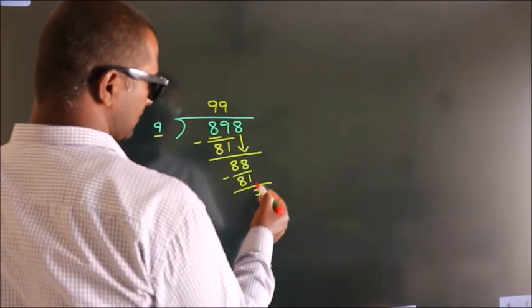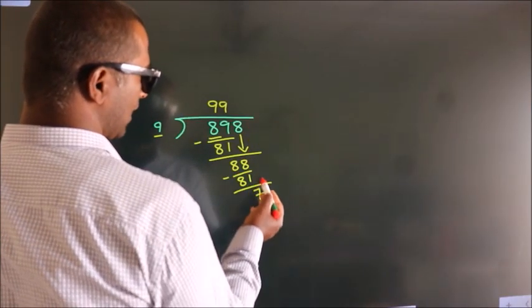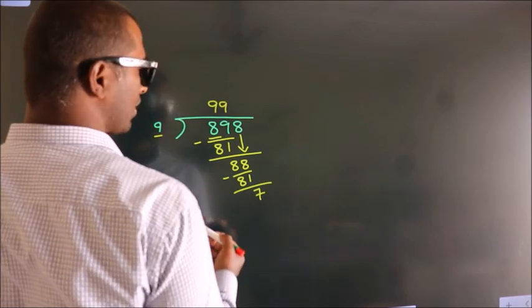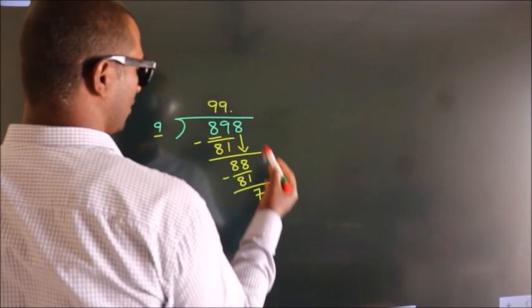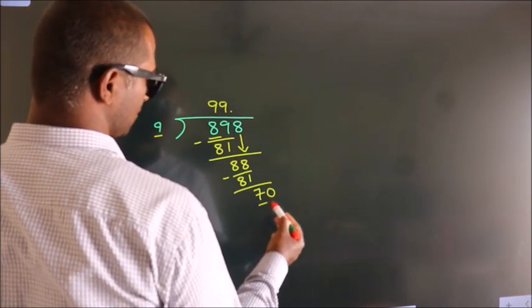After this, no more numbers to bring it down. So what we do is, we put a decimal point and take 0. So 70.